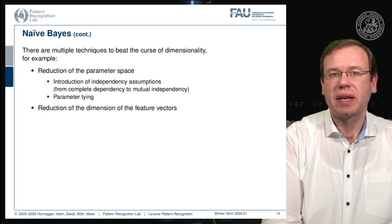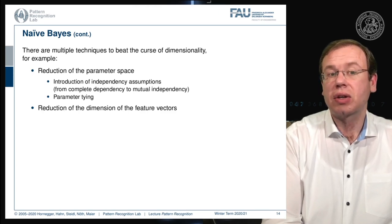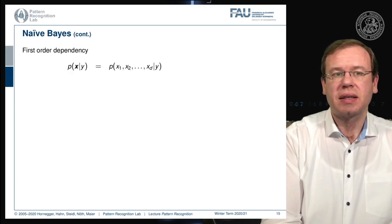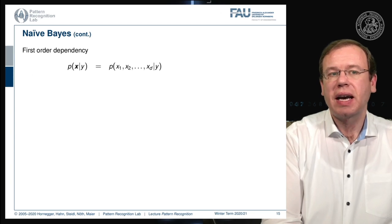Another approach is parameter tying, which can help reduce the dimensionality of the parameter space. There are also other approaches like reducing the dimensionality of the feature vectors, which brings us to the domain of feature transforms. We can write our class-conditional probability in a certain way and start expanding with a first-order dependency.